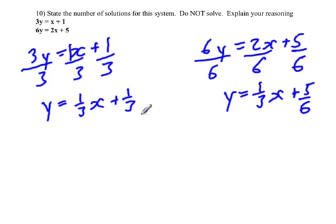And what you can note here is that 1 third is the slope for our first equation, and 1 third is our slope for our other equation. So these two lines are parallel, but they have different y-intercepts.